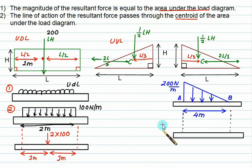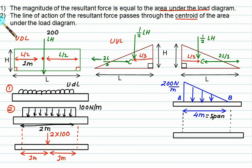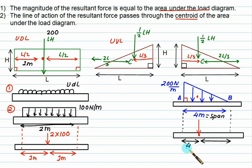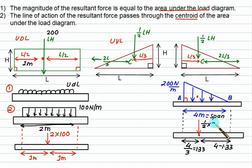For UVL: suppose the load varies uniformly from 0 to 200 N/m over a span of 4 meters. First calculate the area of the triangle: half × base × height. Locate the 90-degree corner and mark the centroid at L/3 from it, which is 4/3 = 1.33 m. The remaining distance is 4 − 1.33 = 2.67 m. The resultant load equals ½ × 4 × 200 = 400 N, acting at the centroid. For UVL and UDL it is simply the area of the load diagram passing through the centroid.